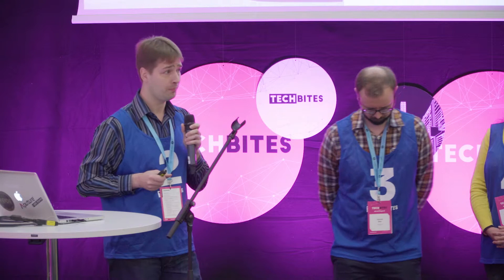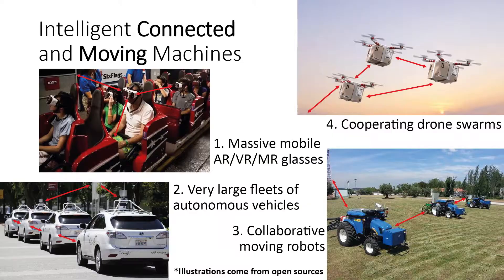Typically we split 5G into three use cases: connectivity for humans, for massive machines, and for reliable machines. But to me that makes no sense, because those use cases can come together all at the same time — you could have massive numbers of machines with high bandwidth demands requiring reliable, low latency connections. Examples include massive VR use cases, collaborative fleets of cars, swarms of robots, and drones.